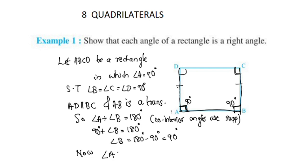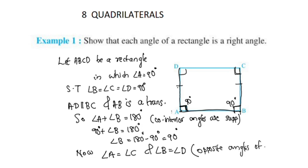Angle A is equal to angle C, and angle B is equal to angle D, because opposite angles of a parallelogram are equal. Angle A and angle C are opposite angles, and angle B and angle D are opposite angles.